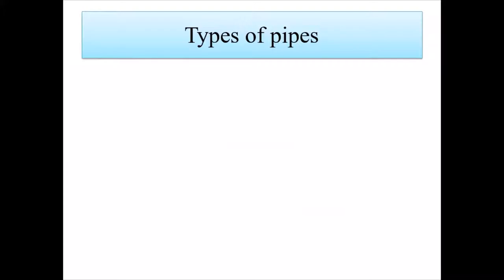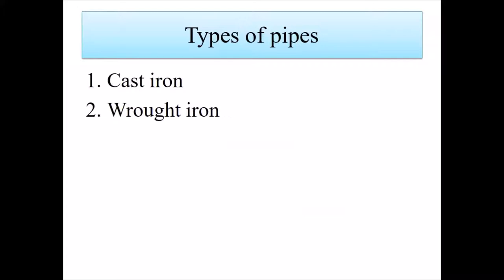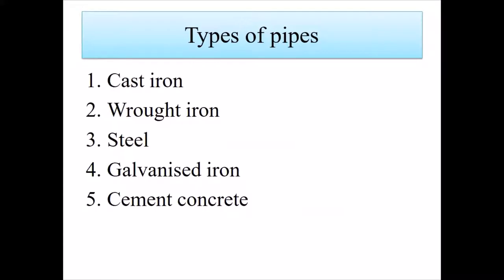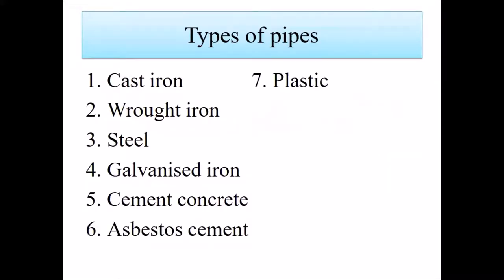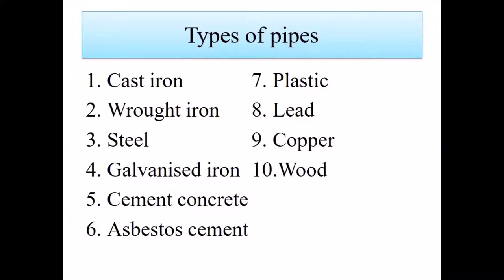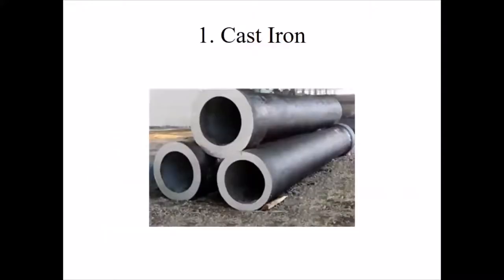The following pipes are used for water supply schemes: cast iron pipe, wrought iron pipe, steel pipe, galvanized iron pipe, cement concrete pipes, asbestos cement pipe, plastic pipes, lead pipe, copper pipe, and wooden pipe.